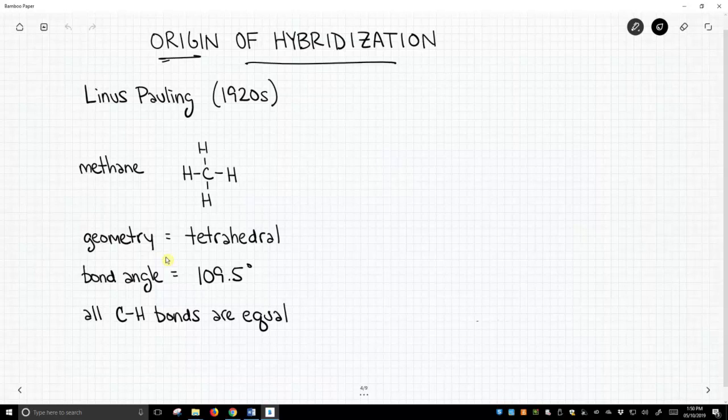Now this last fact is kind of interesting, because if we look at a carbon atom, we know that carbon atom has four atomic orbitals in its valence shell: an S, a PX, a PY, and a PZ. And so how could you take these four different atomic orbitals and get out four equivalent CH bonds?